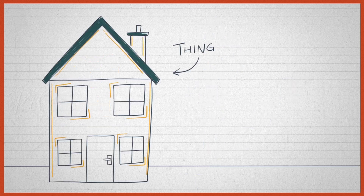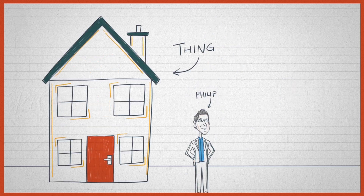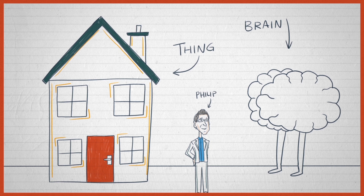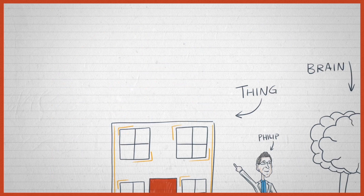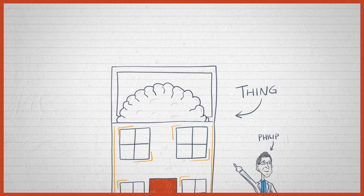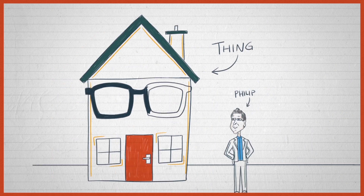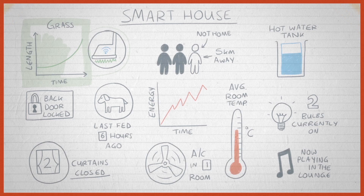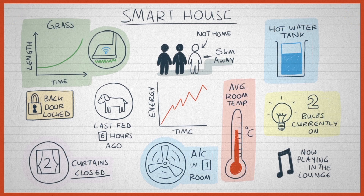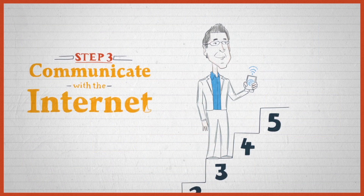Step two: you now need to add a brain to that thing. Because we're going to ask that thing to be self-aware, we're going to ask it to be smart. So we need to add a brain — a microprocessor or a computer that allows that thing to think for itself.